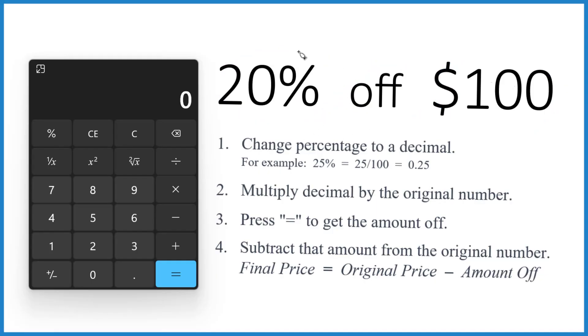We need to change the percentage, 20%, to a decimal. So we just divide 20 by 100, and that will change the percent to a decimal. We get 0.2.